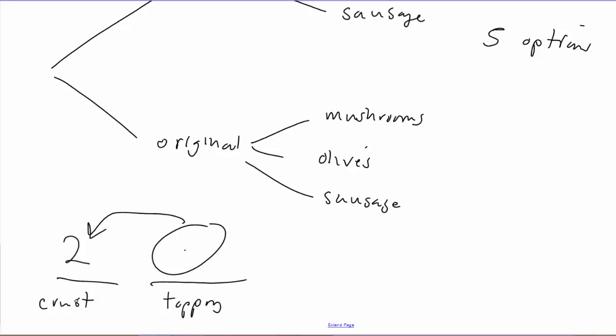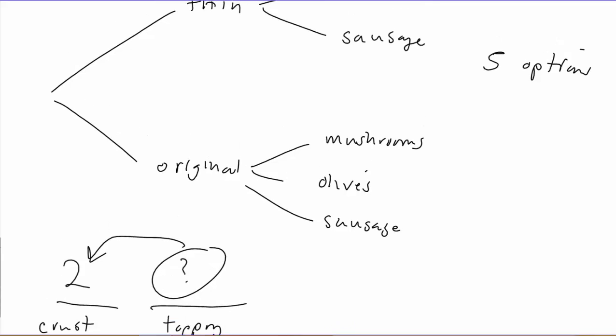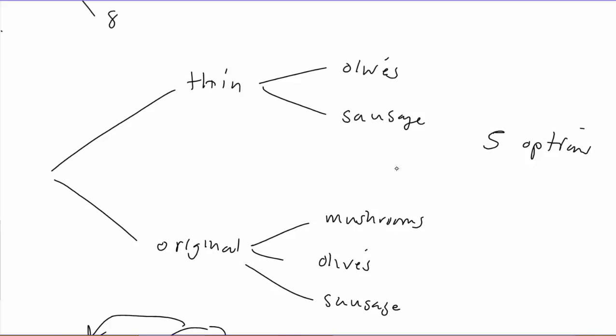These decisions for crust and topping are no longer independent. Thinking in terms of groups: we have two groups, but the number of objects in each group is different — only two objects in one group and three in another. So we cannot simply multiply to get the answer. Here, writing out the decision tree is actually helpful to see what possibilities we have. When doing a counting problem, ask yourself: are the decisions at each step truly independent of the decisions at other steps? If yes, you can use the fundamental principle of counting. If not, you have to do something else.